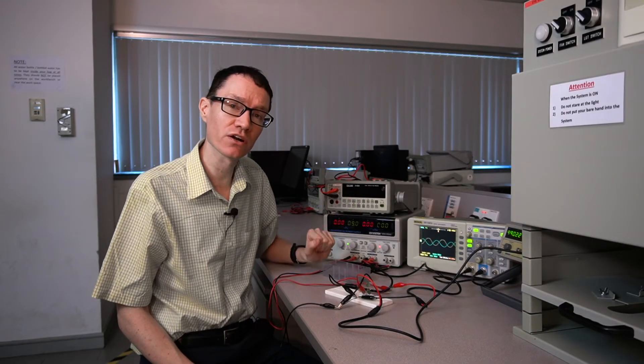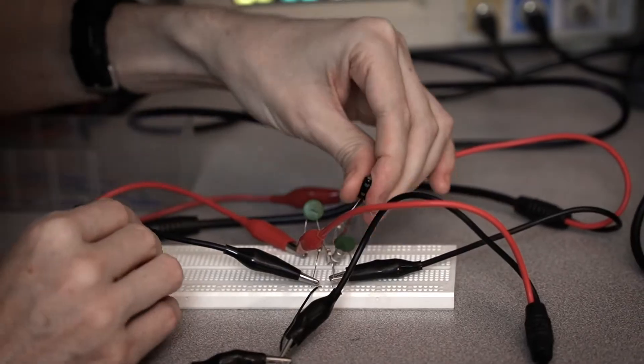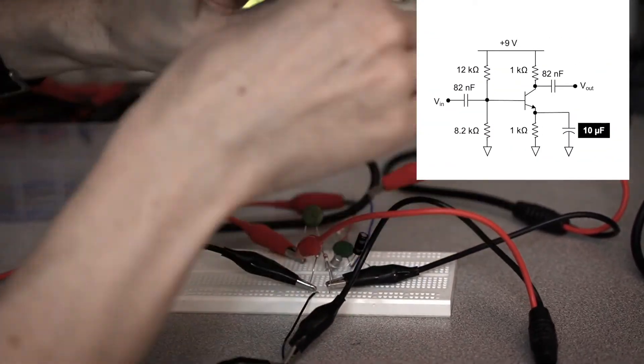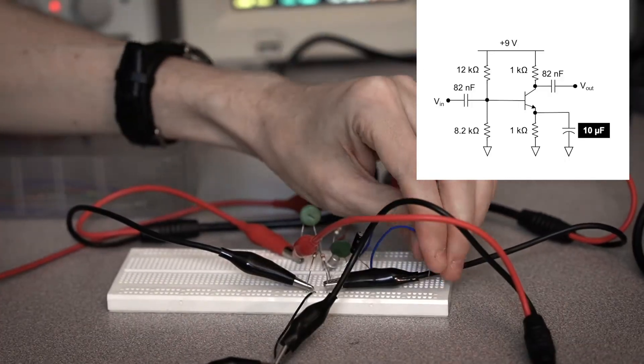This gain won't be enough to get our Colpitts oscillator to work. I'm going to insert this 10 microfarad capacitor in parallel with the emitter resistor. Let's see how that affects the gain.